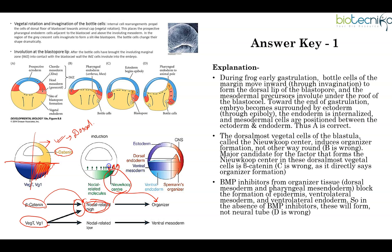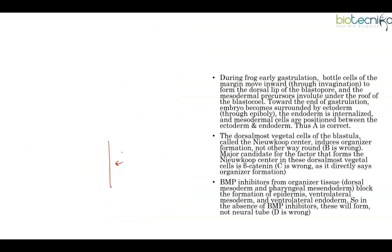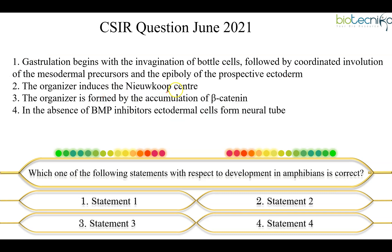The Newcoupe center cells signal upward and make the organizer. Wherever you have only TGF-beta but no beta-catenin, cells signal to form ventral or intermediate mesoderm, not dorsal mesoderm. So when the question states that the organizer induces the Newcoupe center — that is the other way around; the Newcoupe center induces the organizer. Similarly, the organizer is not formed by accumulation of beta-catenin — it is the Newcoupe center that is formed by co-accumulation of beta-catenin and TGF-beta. So statement 2 is wrong.